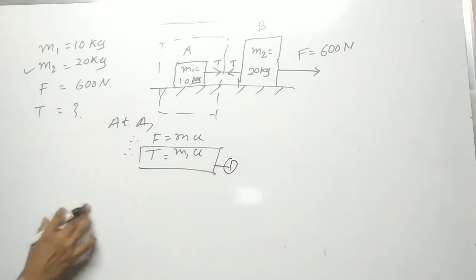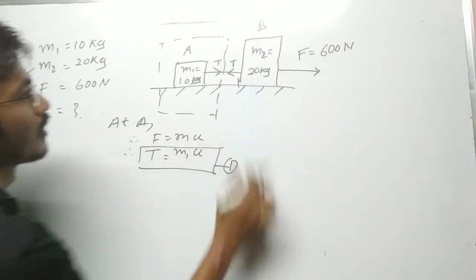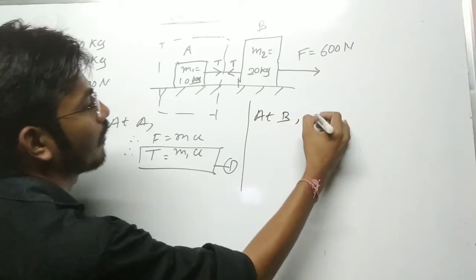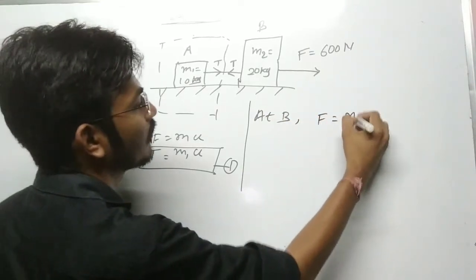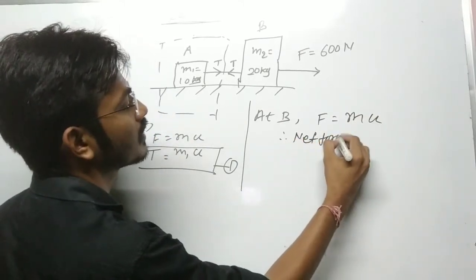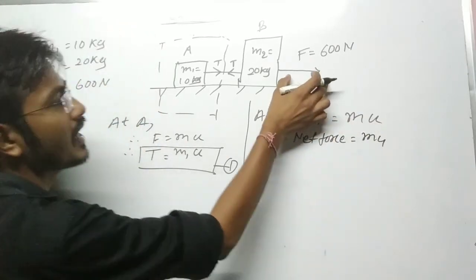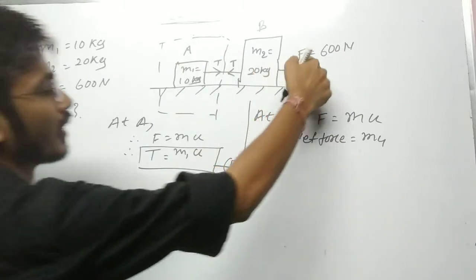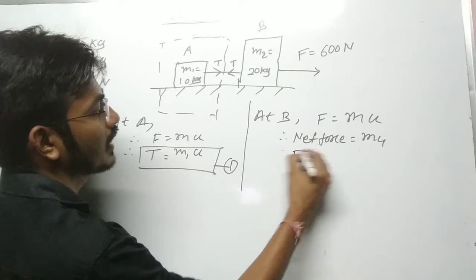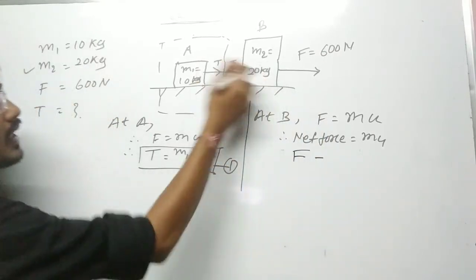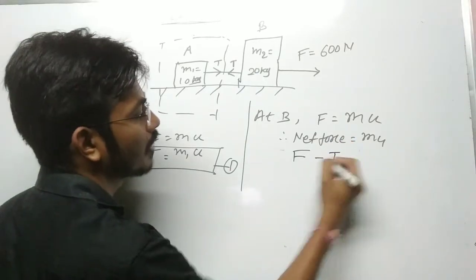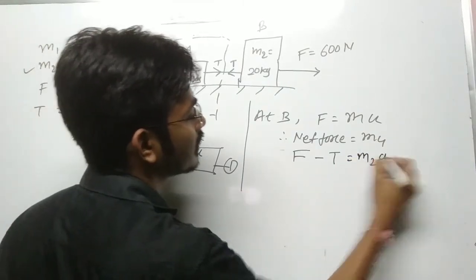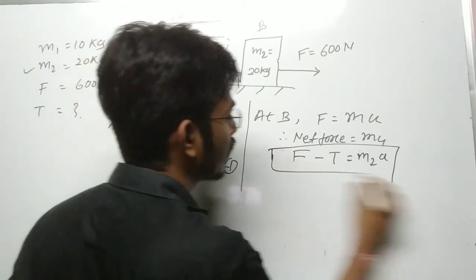Similarly we have to write the equation for block B. At B, as per the second law of motion, F = ma. Here the net force consideration: F = 600 Newton is applied, and in the exactly opposite direction tension is also acting. So the net force is F minus T. Therefore: F minus T = m2 into a — that is equation number two.